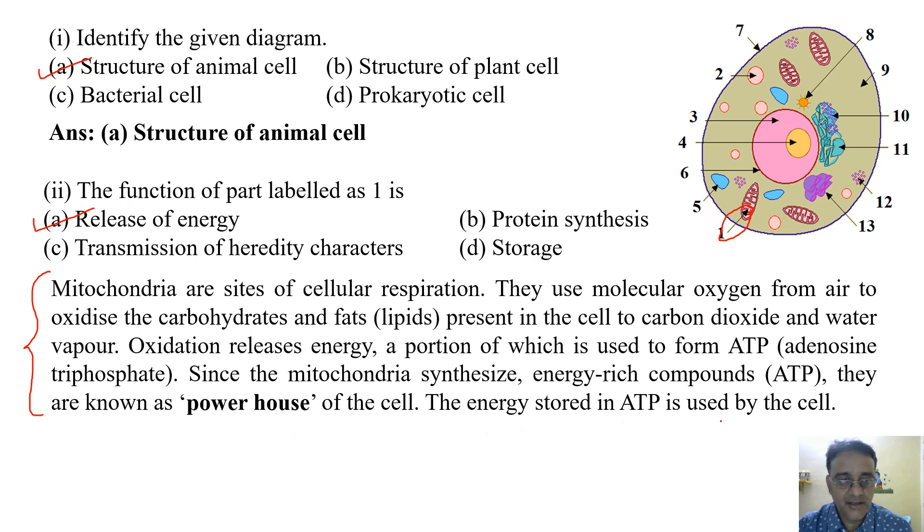This is the explanation I just provided. Mitochondria are sites of cellular respiration. They use molecular oxygen from air to oxidize the carbohydrates and fats (lipids) present in the cell to carbon dioxide and water vapor. Oxidation releases energy, a portion of which is used to form ATP (adenosine triphosphate). Since mitochondria synthesize energy-rich compound ATP, they are known as powerhouse of the cell. The energy stored in ATP is used by the cell. So the correct option is (a).